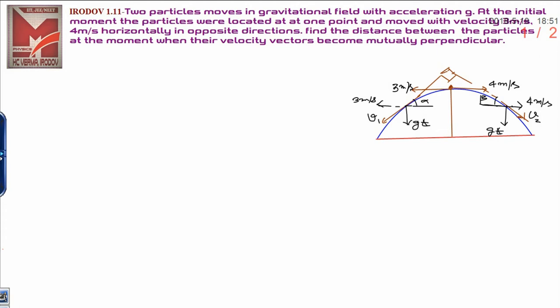Two particles move in a gravitational field with acceleration due to gravity g. At the initial moment, the particles will be located at one point. This is the one point at initial moment, particles will be located over here.